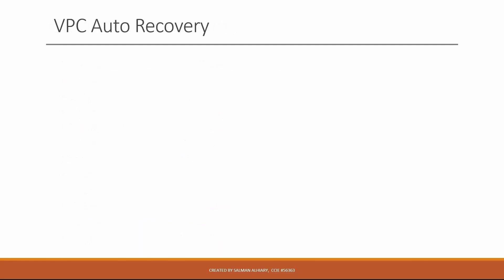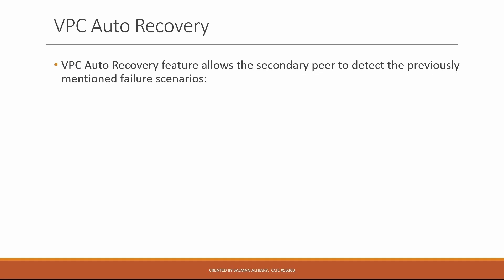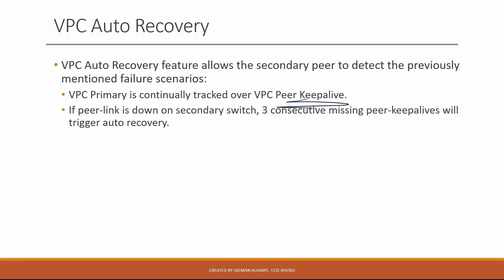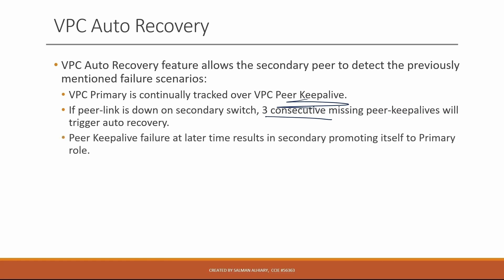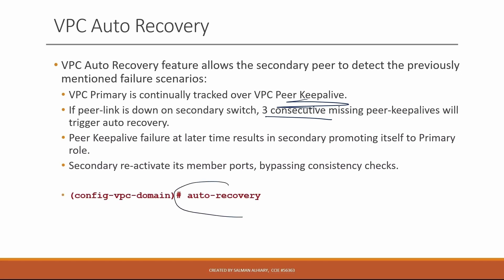The solution is to use the VPC auto-recovery feature. This feature allows the secondary peer to detect the previously mentioned failure scenarios. The VPC primary is continually tracked over the VPC peer keep-alive link. If the peer link is down on the secondary switch, three consecutive missing peer keep-alive messages will trigger auto recovery. A keep-alive failure at a later time results in the secondary promoting itself to the primary role, reactivating its member ports by passing the consistency check. This is configured using the auto-recovery command.